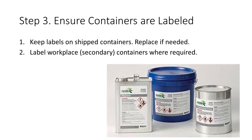Step three is to ensure your containers are labeled. Chemical manufacturers and importers are required to provide labels on shipped containers with the following information: the product identifier, the signal word — danger or warning — pictograms, hazard statements, precautionary statements, and the name, address, and phone number of the responsible party or manufacturer. When an employer receives a hazardous chemical from a supplier, all of this information will be located together on the label. As the employer, you may use the same label from the supplier or label workplace containers with alternative systems such as the National Fire Protection Association or the Hazardous Materials Identification System.